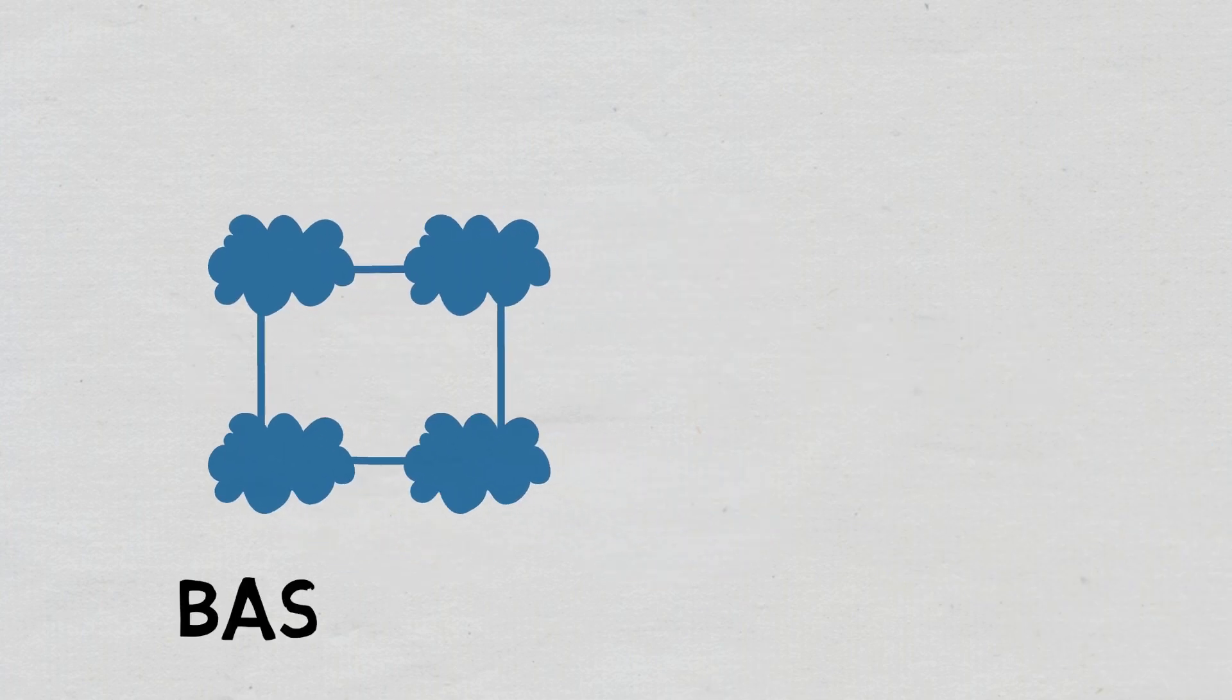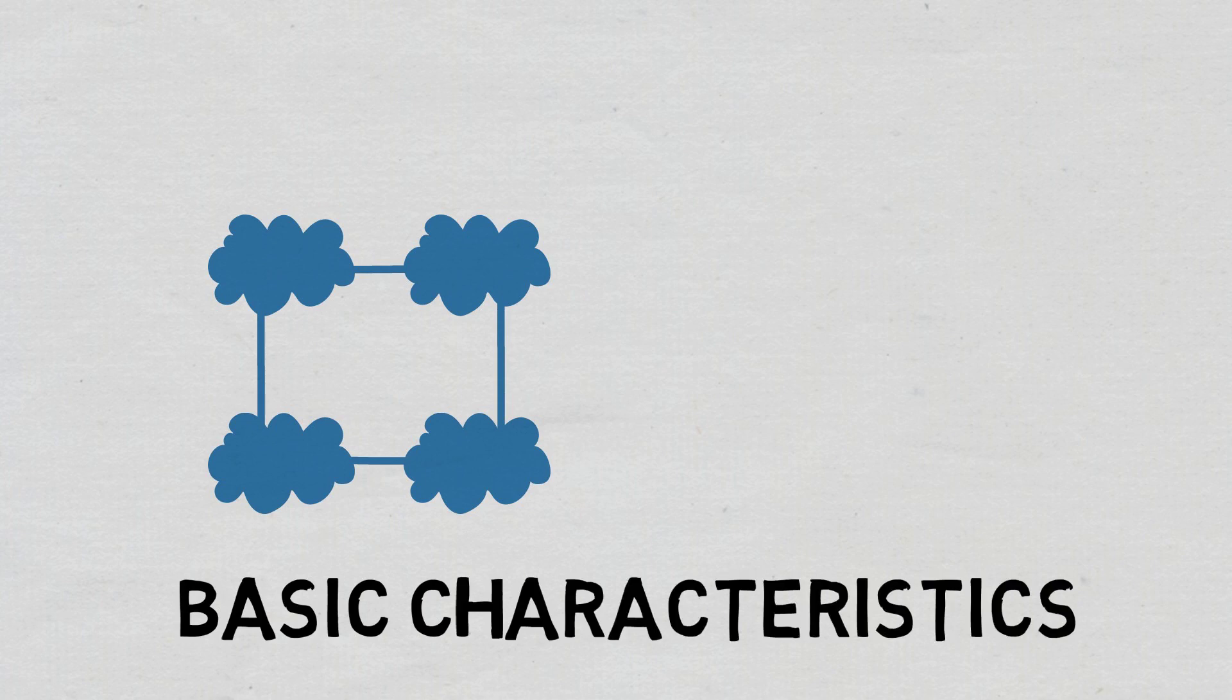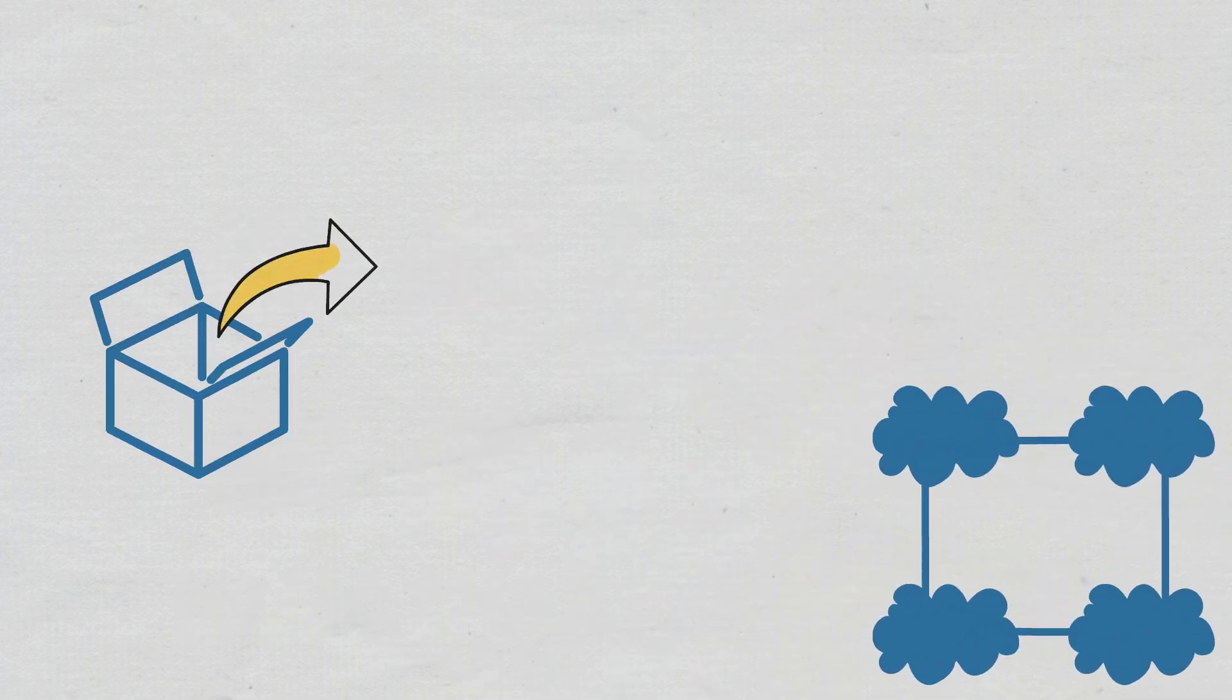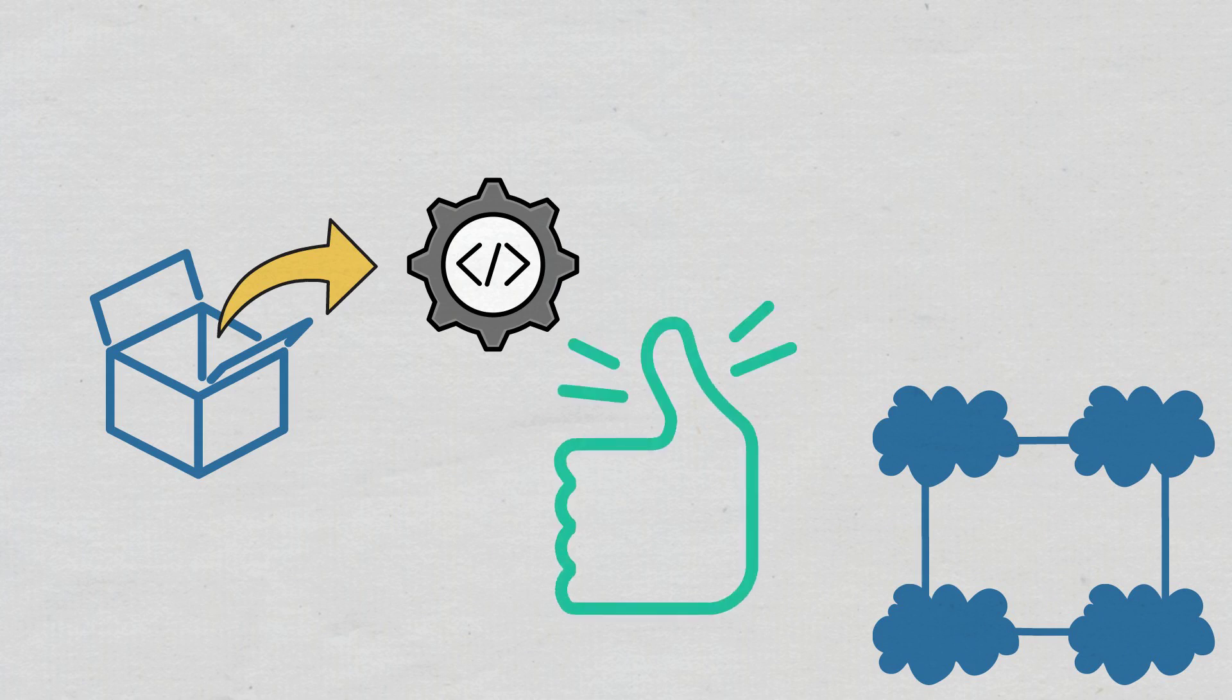DApp Features. Under the hood, dApps generally share the following basic characteristics that set them apart from centralized apps. They are open-source, which means anyone can see their code. Also, changes and updates are decided upon through a consensus mechanism.